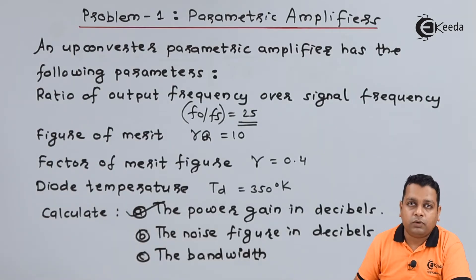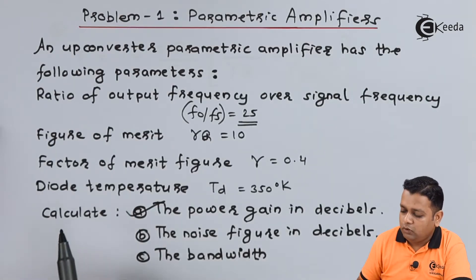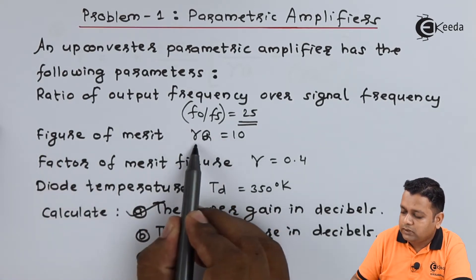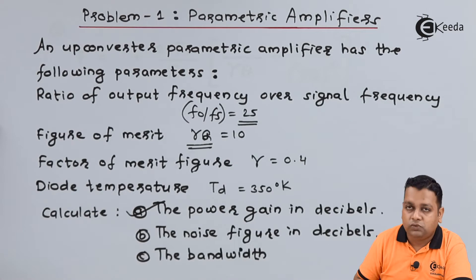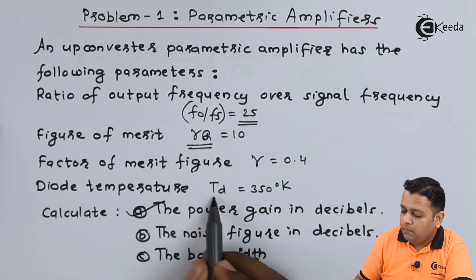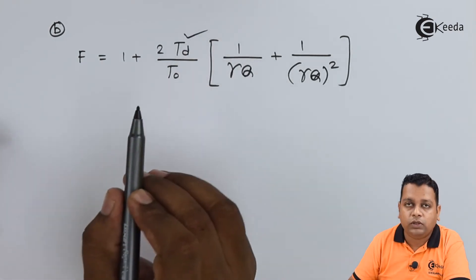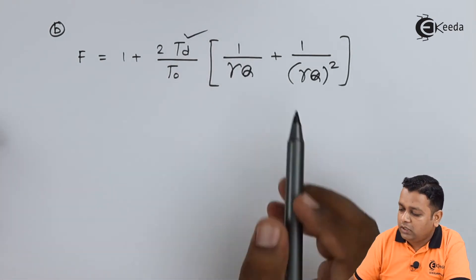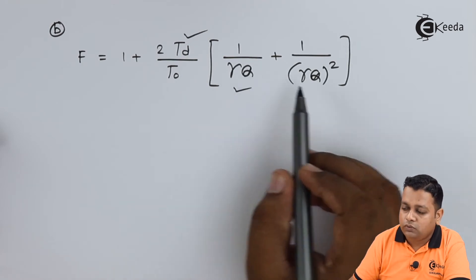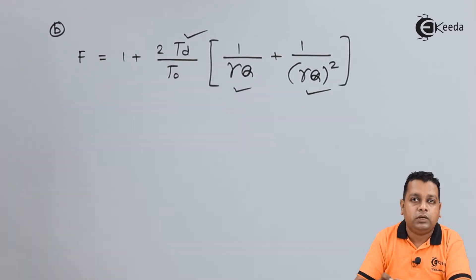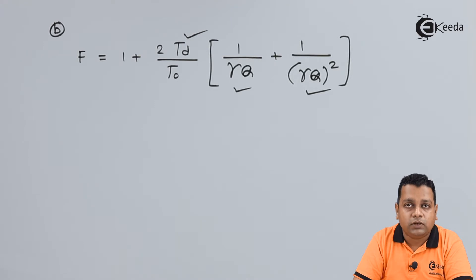Getting back to the problem statement, to obtain the noise figure we use the figure of merit γQ along with the diode temperature T_D. We have the value of T_D, the value of γQ and its square. We also require T₀, which is the standard temperature, substituted as 300 degrees Kelvin.